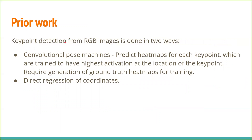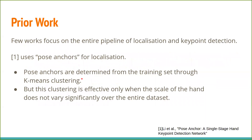Key point detection itself has mostly been done in two ways. Convolutional pose machines predict heat maps for each key point, where these heat maps are trained to have the highest activation at the location of the key point — this approach requires generation of ground truth heat maps for training. The second approach is direct regression of coordinates from the image. One of the few works focusing on the entire pipeline of localization and key point detection is the work by Lee et al., which uses pose anchors.